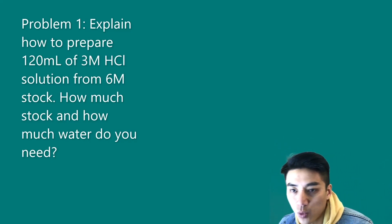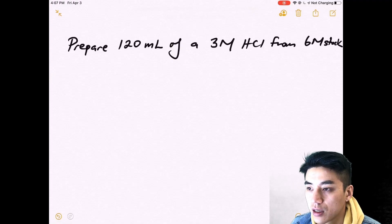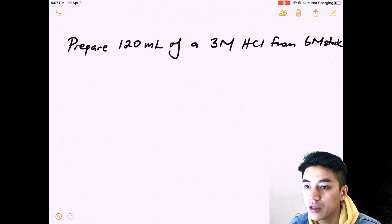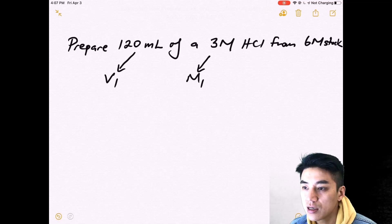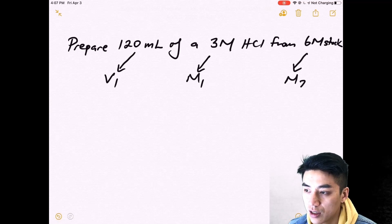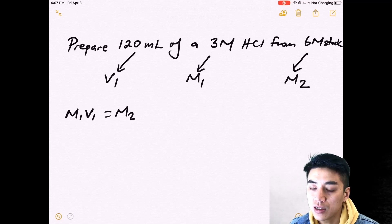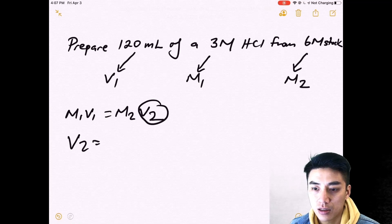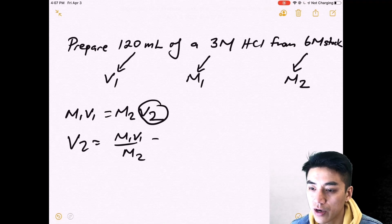Here's the next problem. Problem one. Okay, prepare 120 mils of a 3 molar from the stock. So I'll write out the problem here again. All right, that looks like it's V1. That's M1. And it looks like M2 is given. Write out your equation. Circle the one that's not given. That's V2. Solve for V2. V2 is M1V1 over M2.